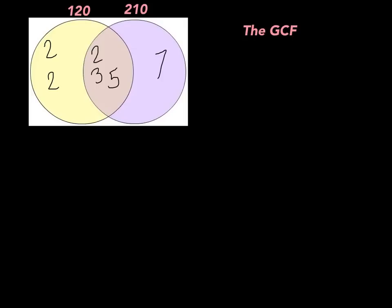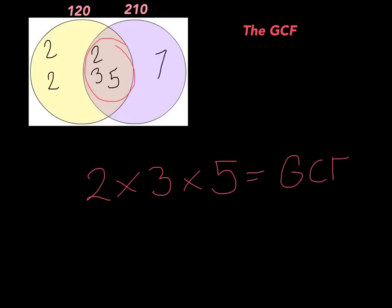Now test yourself by finding the greatest common factor for 120 and 210 using the Venn diagram. Pause, give it a try, then come back. To find the GCF, focus on what's in the center of the Venn diagram — the 2, 3, and 5 — and multiply them together. 2 × 3 = 6, and 6 × 5 = 30. So the greatest common factor for 120 and 210 equals 30.